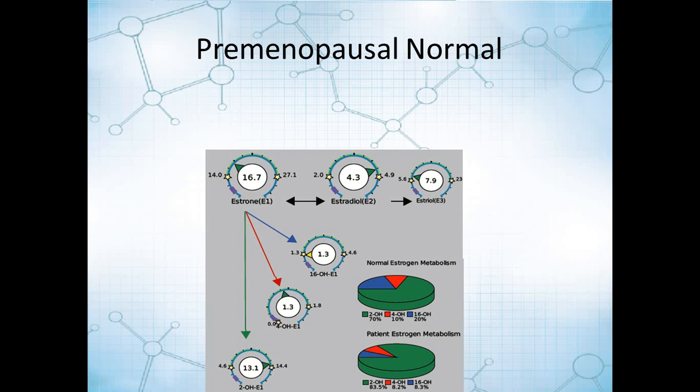It can depend on which estrogen metabolite you're looking at, but you want to look at them as a whole. Typically you're going to find premenopausal women within this range between the stars here, which is well above the postmenopausal range, which is in that little purple band.